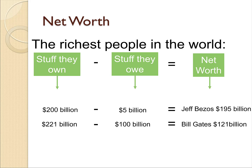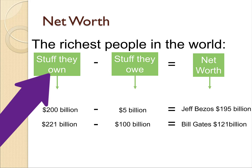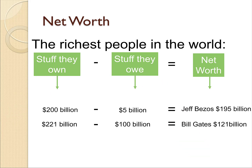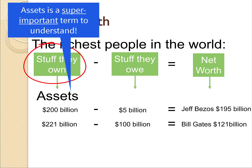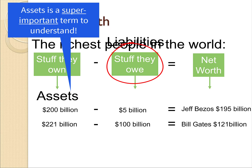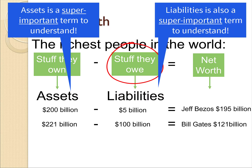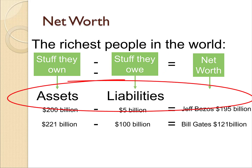The same goes for businesses. Many businesses own a lot of stuff, but they also owe a lot of money. Now accountants decided they can't use the terms 'stuff they own' and 'stuff they owe' — it doesn't sound very sophisticated. So instead of saying stuff they own, they called it assets. And instead of saying stuff they owe, they decided to call it liabilities. So the official formula for net worth is: assets minus liabilities equals net worth.